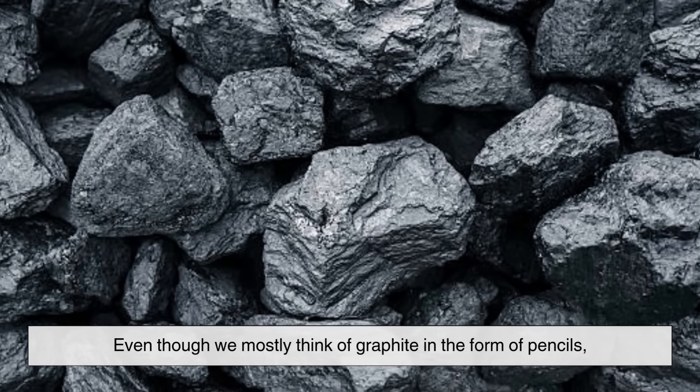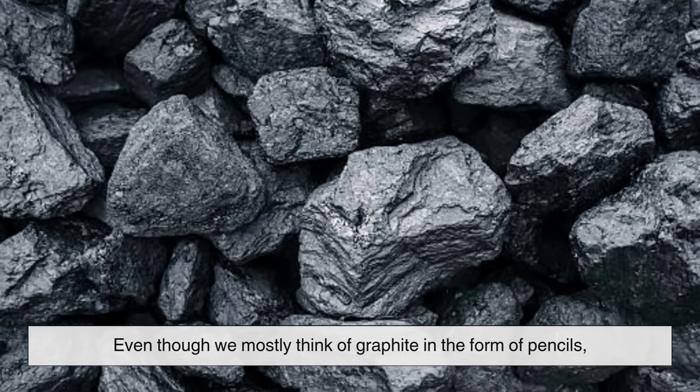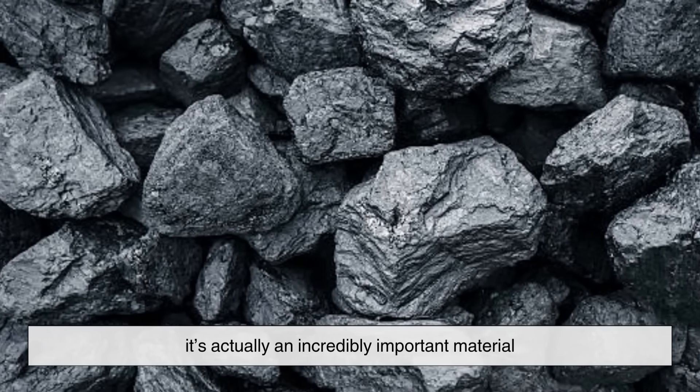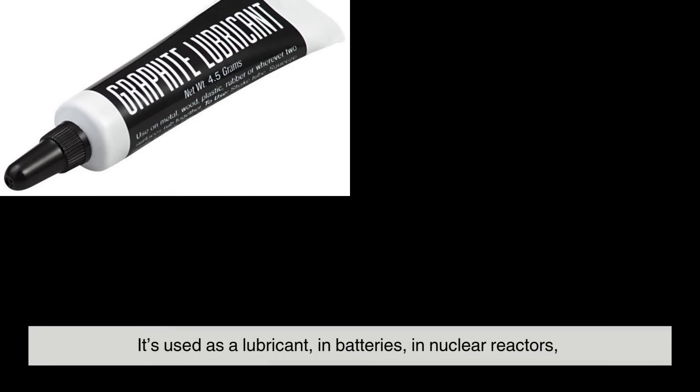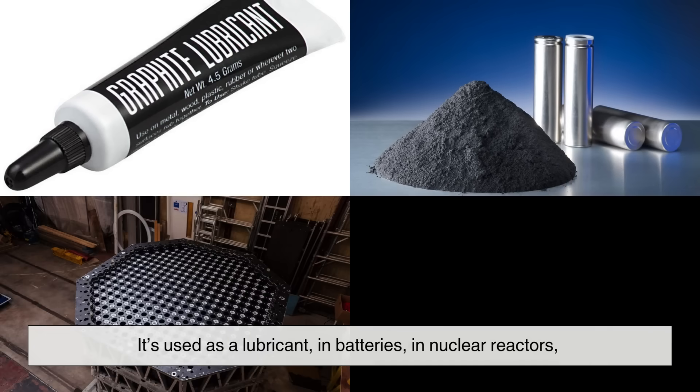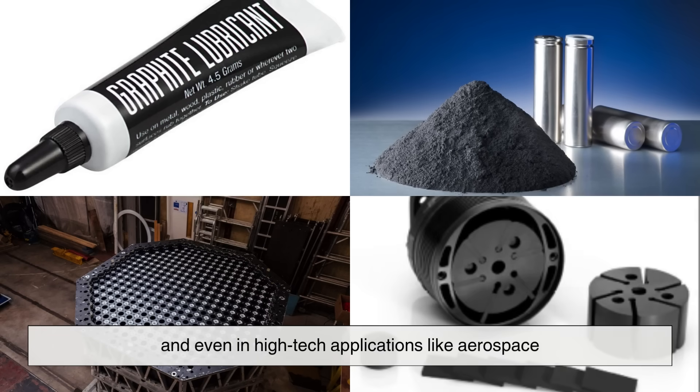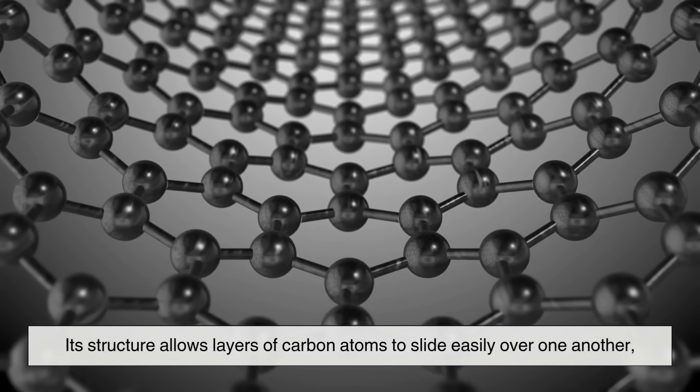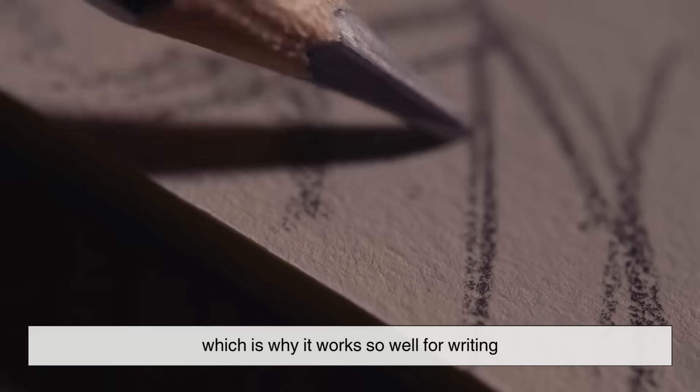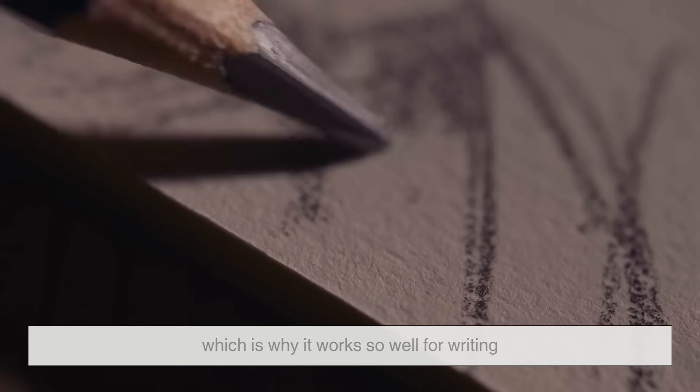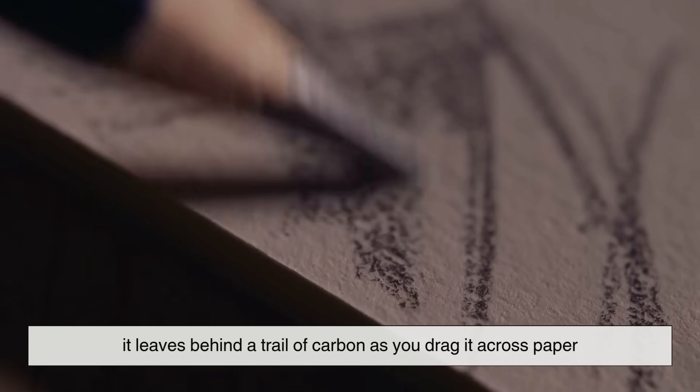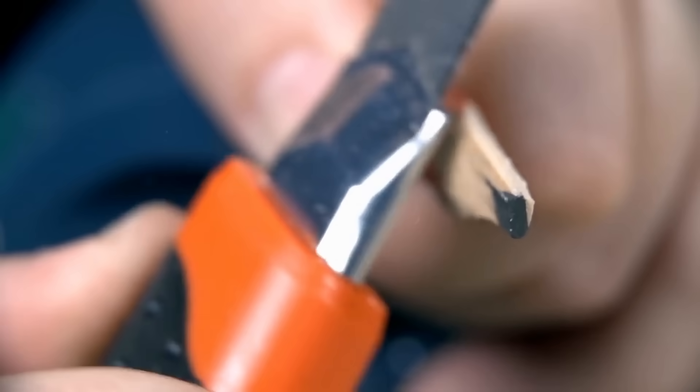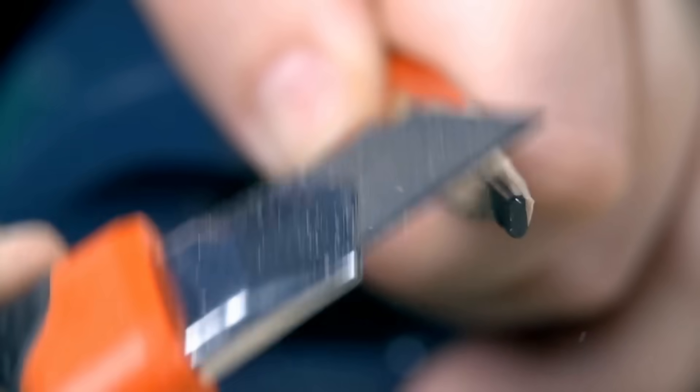Even though we mostly think of graphite in the form of pencils, it's actually an incredibly important material. It's used as a lubricant, in batteries, in nuclear reactors, and even in high-tech applications like aerospace. Its structure allows layers of carbon atoms to slide easily over one another, which is why it works so well for writing. It leaves behind a trail of carbon as you drag it across paper. Pencils are really just the tip of the iceberg when it comes to graphite's usefulness.